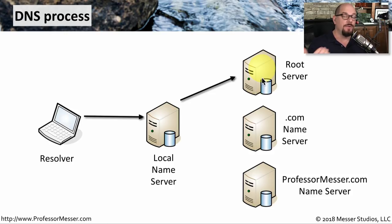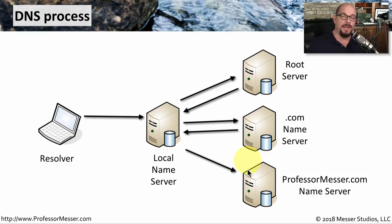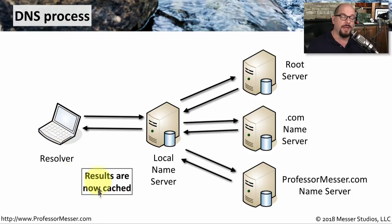The root server responds and says: if you're looking for anything with a .com, you need to go to the .com name server. So the local name server talks to the .com DNS server, which has a list of where the DNS server for professormesser.com is, and provides that to the local name server. The local name server then queries the professormesser.com name server, which has the IP address for www.professormesser.com, and that information is returned. The local name server then tells the resolver the IP address and stores it in cache, so future queries can be resolved locally without repeating all these steps.